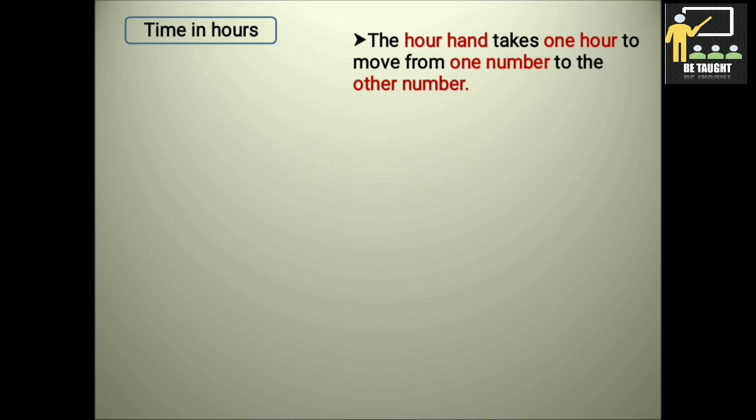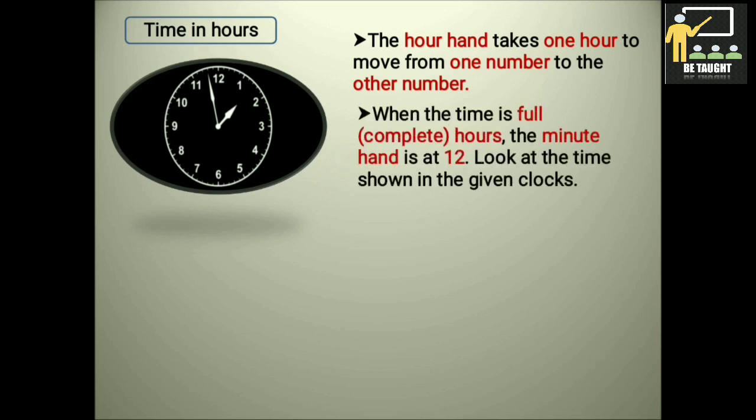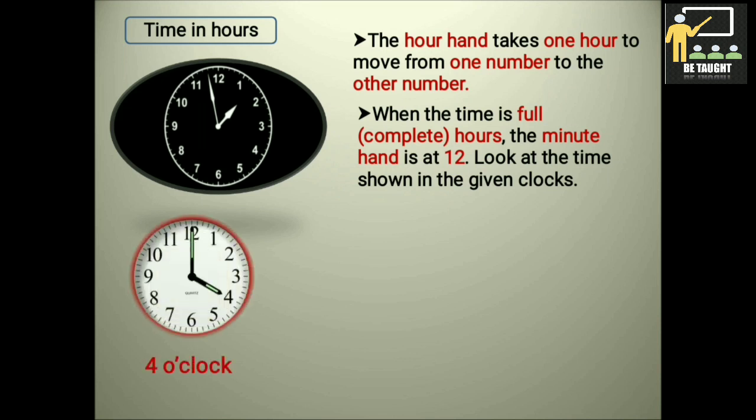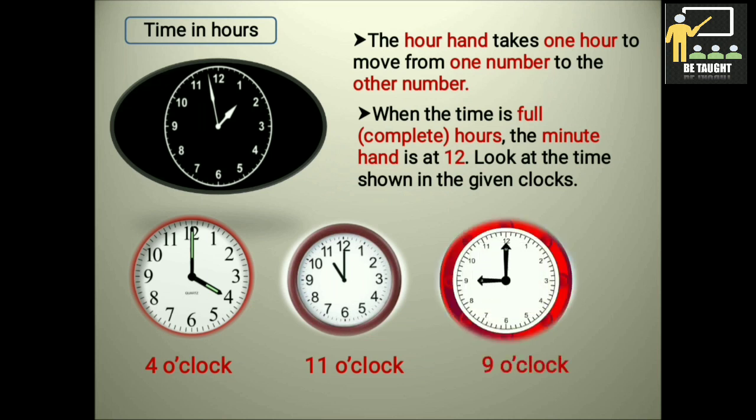Time in hours. The hour hand takes one hour to move from one number to the other number. When the time is full, that is complete hours, the minute hand is at 12. Look at the time shown in the given clocks. Here it is 4 o'clock, 11 o'clock, 9 o'clock.